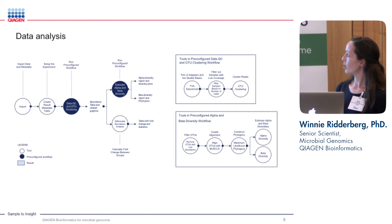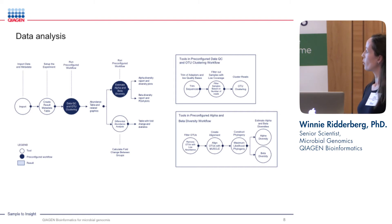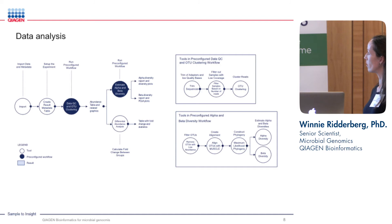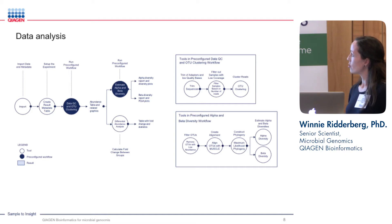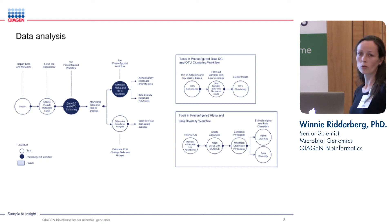The result of this workflow is an abundance table with both the absolute numbers and the relative abundances, and all the related graphics. From this abundance table you can do several things. You can estimate the alpha and beta diversities using a pre-configured workflow, which removes low-abundance OTUs, aligns the OTUs using MUSCLE, and calculates the maximum likelihood phylogeny. The outputs are reports on alpha diversity and related diversity plots, and a report on beta diversity with related PCoA plots. You can also calculate the differential abundance, which outputs a table with fold change and related statistics for comparing any two samples in your dataset.